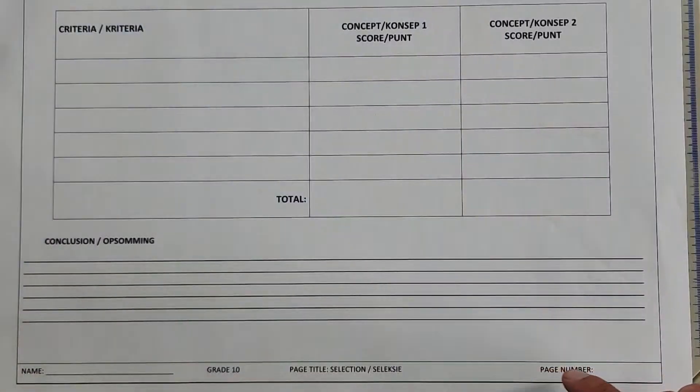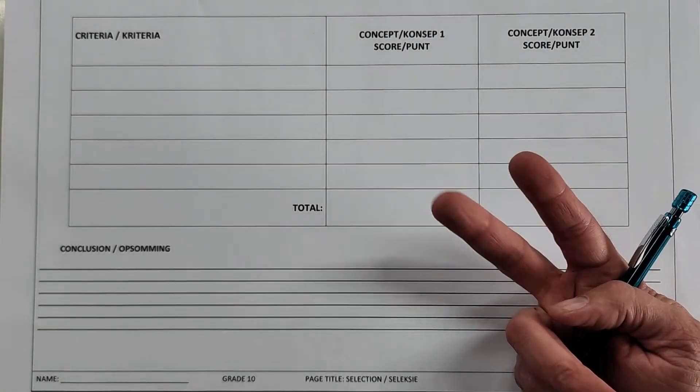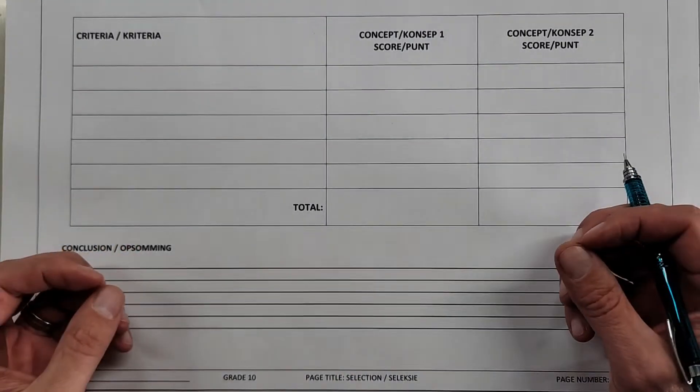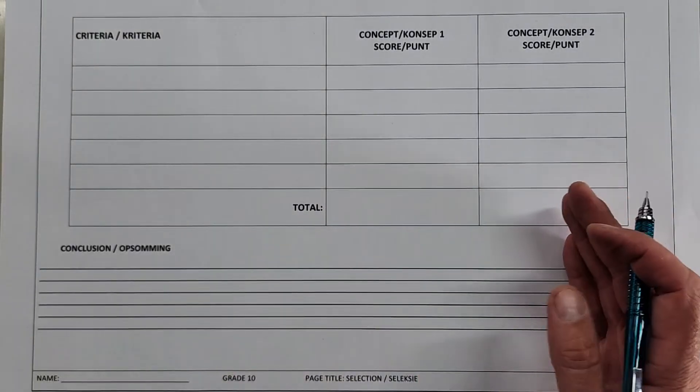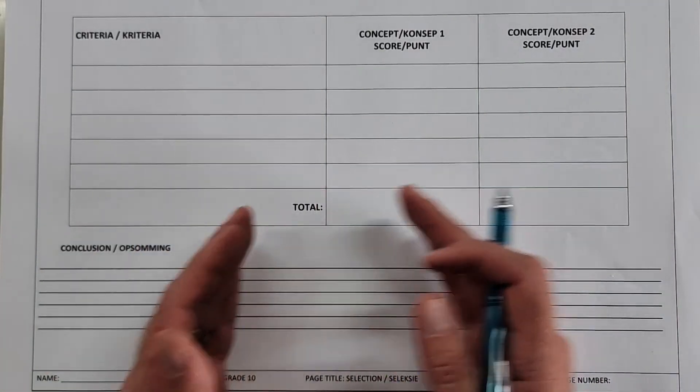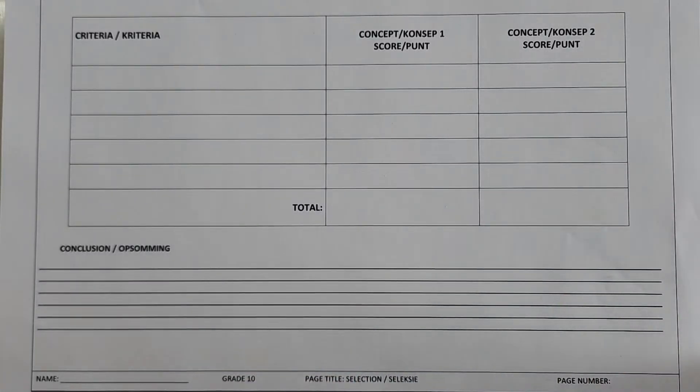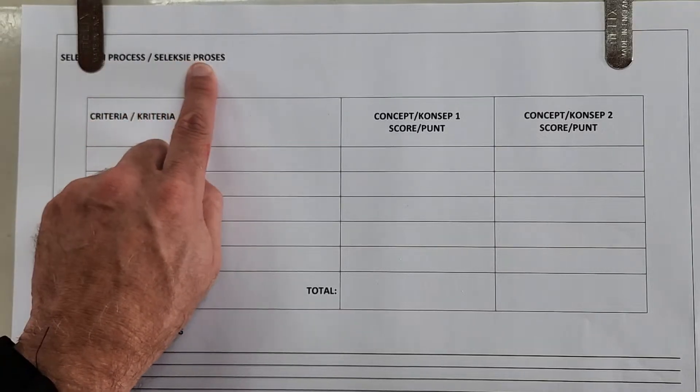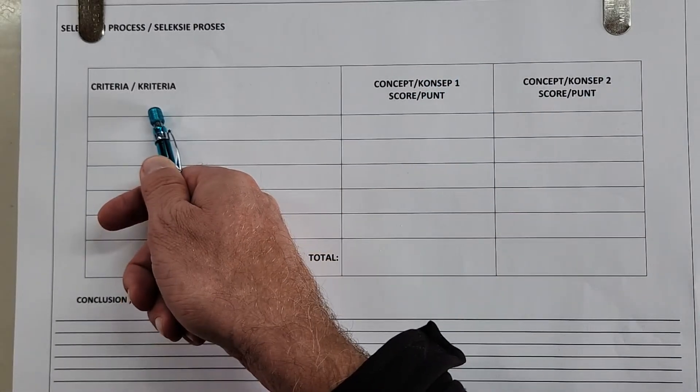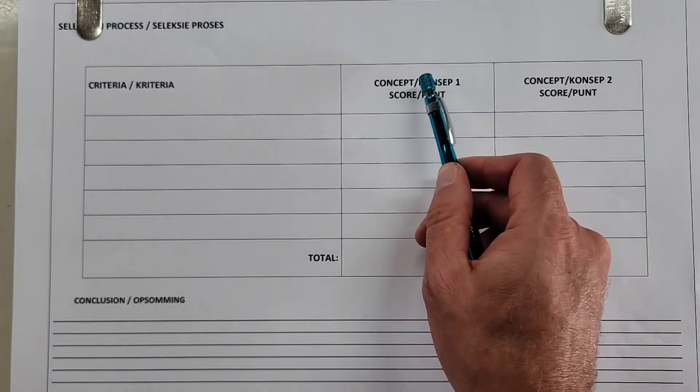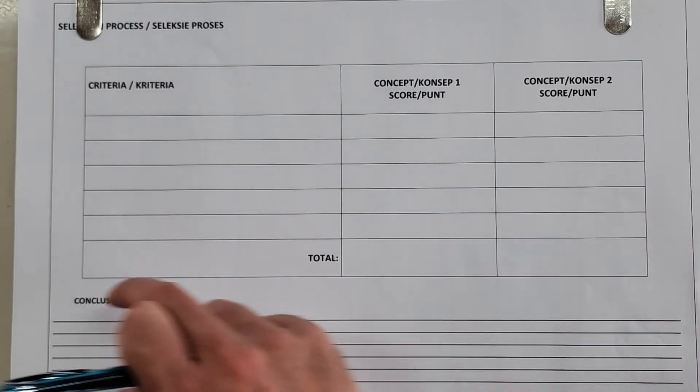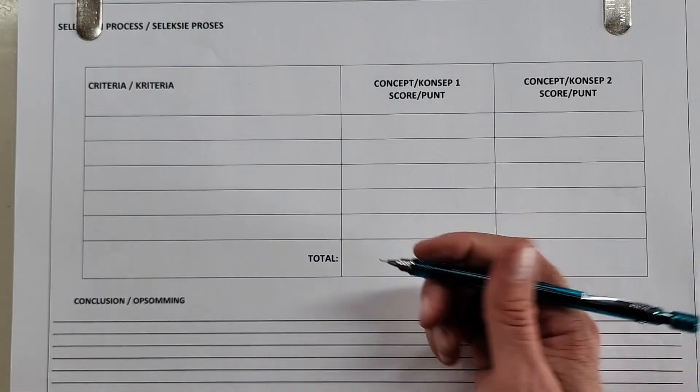Today we're looking at the selection process because now you've got two concepts and I know you're very chuffed with both of them, but one of them is better than the other one, and we have to go through a process of determining which one is it. This is the same process that you will follow in grade 11 and 12 when you are deciding on what concept to use. In this one we have reduced the criteria and requirements of this page, but it is in essence still the same.